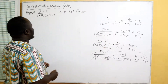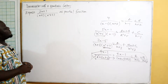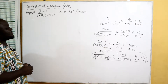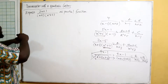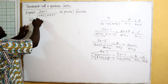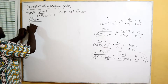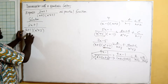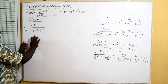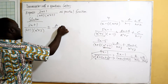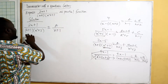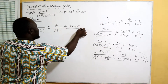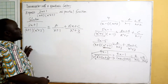Now let's solve the example on the board: express two x plus one over x plus one times x squared plus three as partial fractions. We have one linear factor and one quadratic factor, so this becomes a over x plus one for the linear, plus bx plus c over x squared plus three for the quadratic.